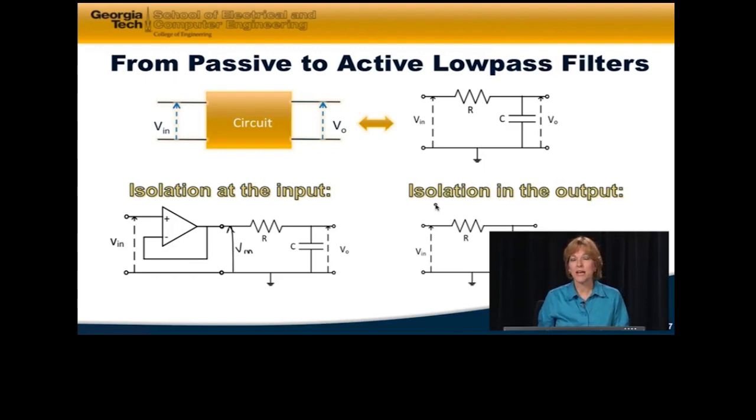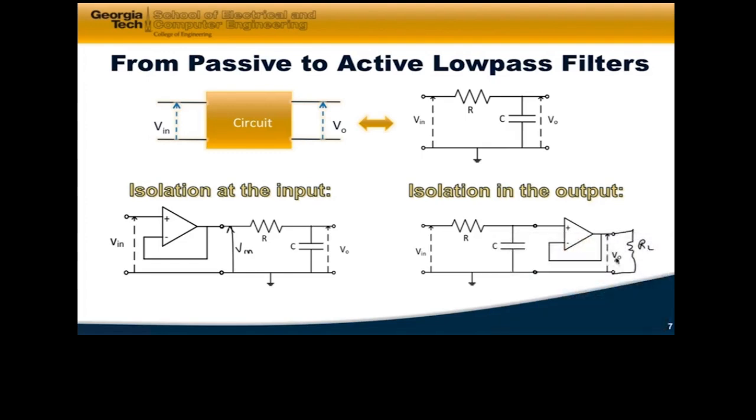If I want isolation at the output, then I take my circuit, and I add my buffer circuit at the output. In this case, if I were to add, say, a resistor right here, I'm not going to change Vout. So I can add a whole circuit on here, cascade something else to it, and I won't be changing Vout. So this is just taking a simple passive filter and make it into active by adding an op-amp.